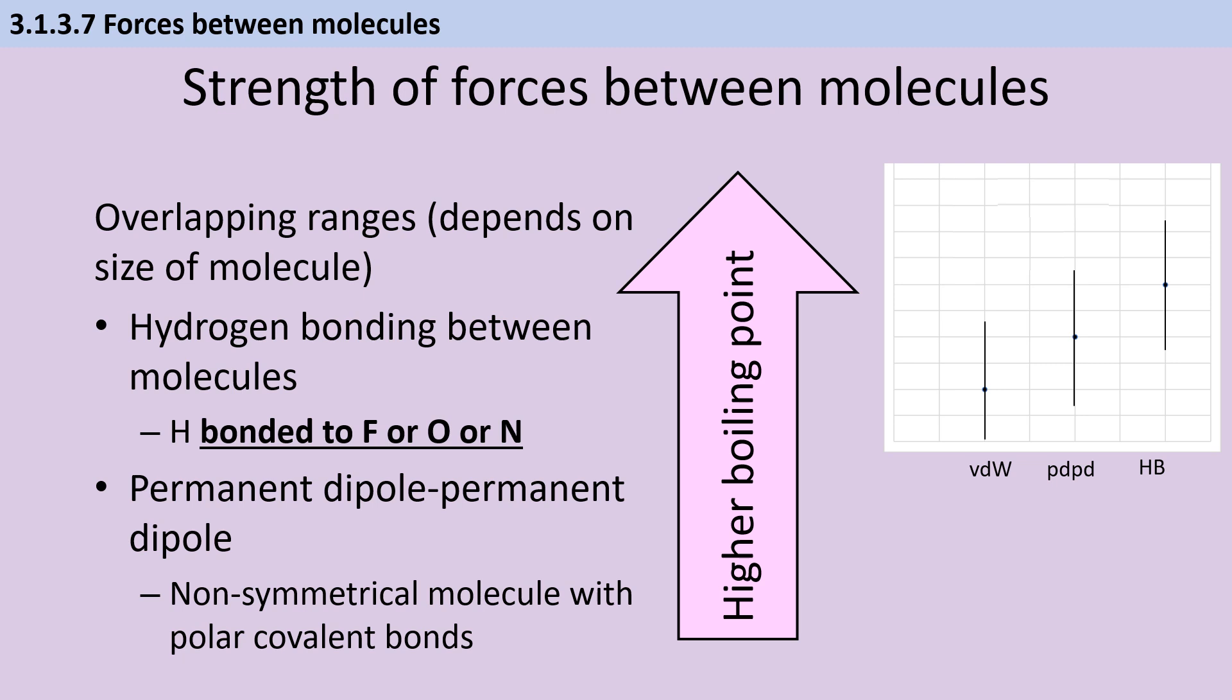The second type of weak intermolecular force is the permanent dipole-permanent dipole interaction. And this arises when we have a non-symmetrical molecule that contains bonds that are polar, but not as polar as the ones that lead to hydrogen bonding. For instance, if you have carbon bonded to chlorine, that's a polar bond. And if it's a non-symmetrical molecule, that could lead to a permanent dipole-permanent dipole interaction between two adjacent molecules.